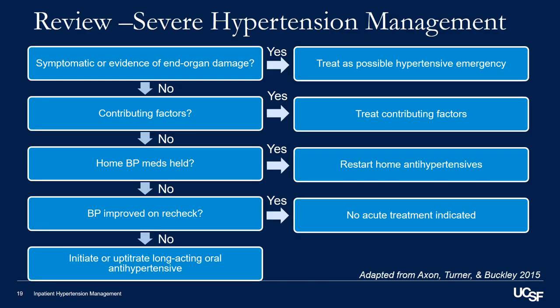Finally, here's a chart reviewing the principles of severe hypertension management. The first step is to assess if the patient is symptomatic or has evidence of end-organ damage; if so, treat as possible hypertensive emergency. If not, assess and treat contributing factors, and consider restarting any held home blood pressure medications unless contraindicated. Blood pressure should be rechecked after 30 minutes of rest using an appropriately sized cuff. If still severely elevated, consider initiating or uptitrating a long-acting oral antihypertensive in most patients.